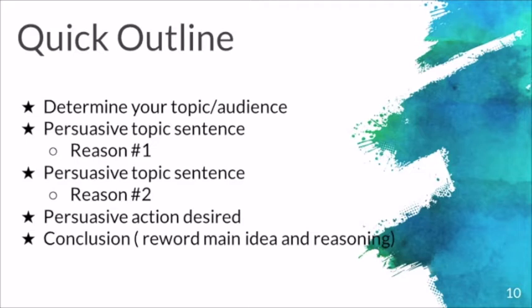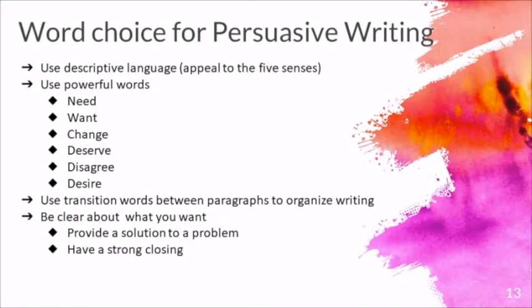Regarding the quick outline, you need to determine your topic and audience, because when you're writing, this could be for any topic you want to write about. Your persuasive topic sentence, your reason — you may be able to provide evidence — you want to add a transition sentence to your second persuasive topic sentence, your second reason, and then the persuasive action desired. What do you want to obtain or gain from your writing? Then lastly, you write a conclusion, rewording your main idea and your overall reasoning for this paper.